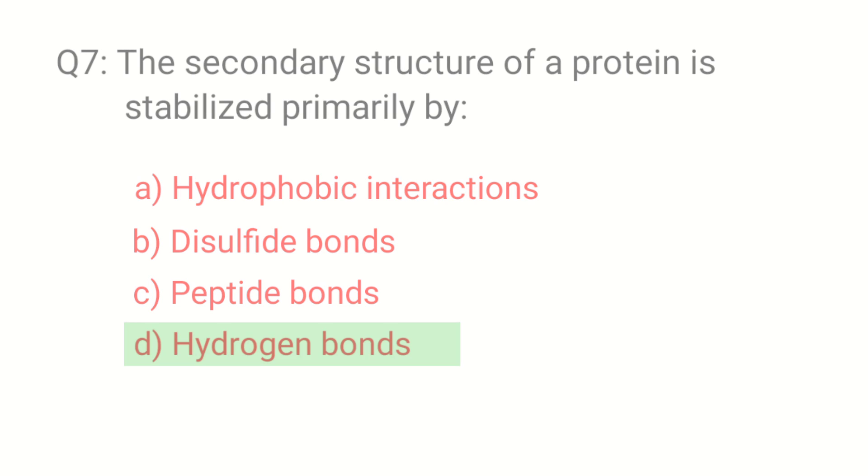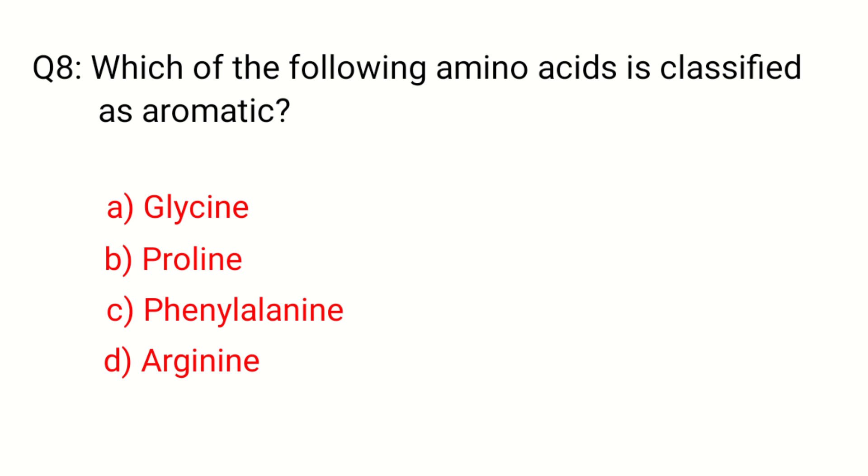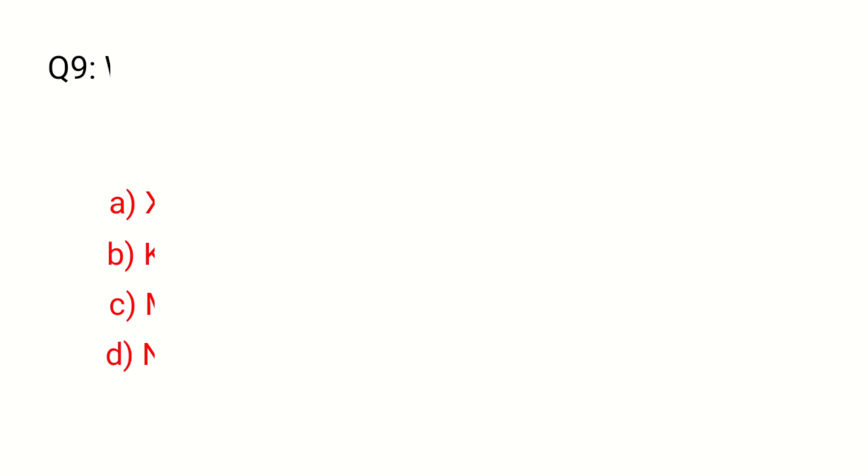Question 8. Which of the following amino acid is classified as aromatic? The correct answer is option C, Phenylalanine. Question 9.